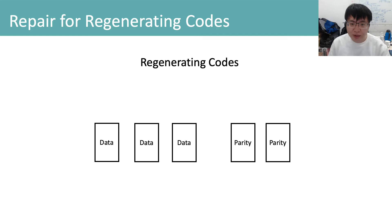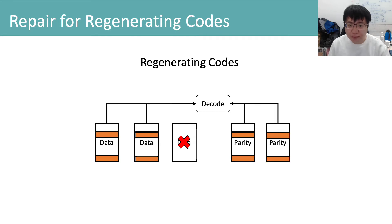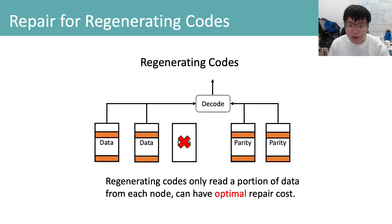Regenerating codes are a special family of erasure codes designed to minimize repair cost. Unlike RS code which needs to read all data from nodes, regenerating codes reduce repair cost by only reading a portion of data from each node. Some of the regenerating codes can achieve theoretically optimal repair cost while providing the same storage efficiency and reliability guarantees.